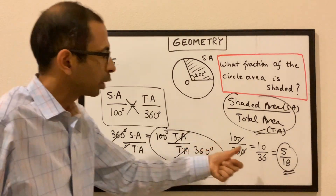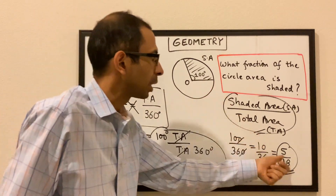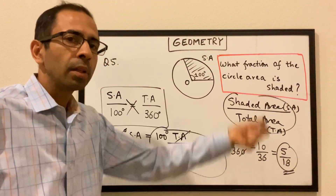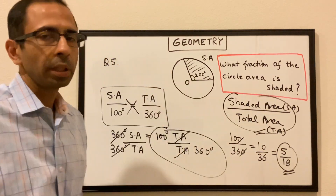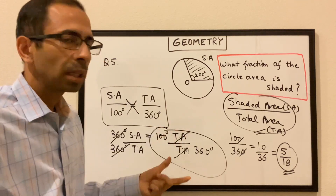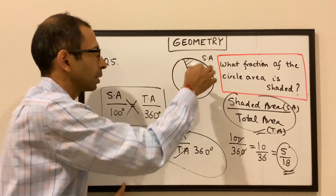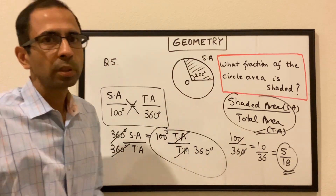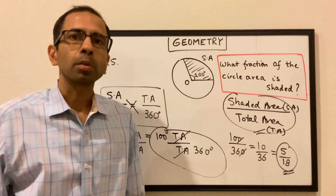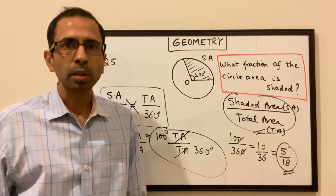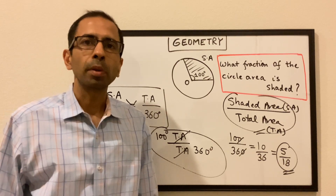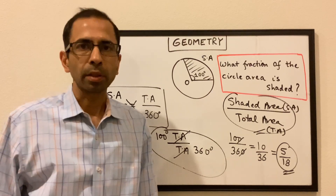So the ratio of the shaded area to the total area is 5 over 18 — in other words, 5/18 of the total area is shaded. Just to quickly reiterate: we are using the same concept that area and central angle go in the same proportion, just like the circumference. Hopefully you got a good idea of typical circle-related geometry questions. Keep practicing, and in case of any questions, please feel free to reach out to us at info.mathseeds.gmail.com. See you in the next session.